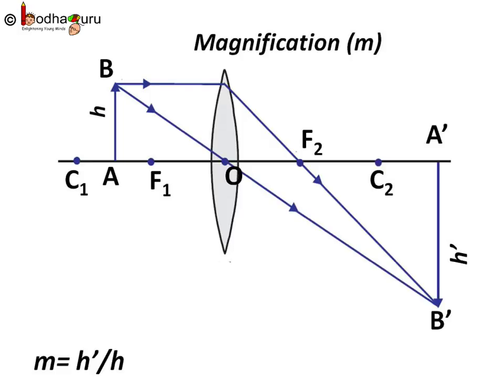The magnification produced by a lens is defined as the ratio of the height of the image H' and the height of the object H. It is represented by the letter M. M is equal to height of the image divided by height of the object, that is equal to H' by H.